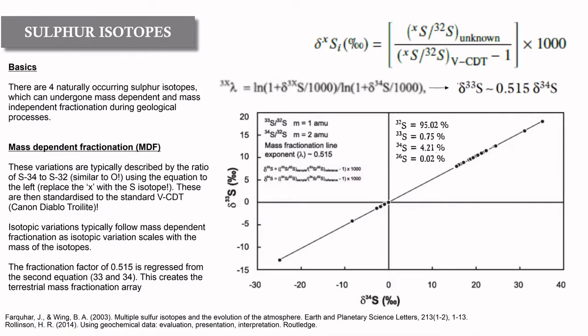Moving on to sulfur isotopes - in some ways they operate very similarly to oxygen isotopes. There are four naturally occurring sulfur isotopes: 32, 33, 34, and 36. There is also a cosmogenic sulfur-35. These can undergo mass-dependent and mass-independent fractionation. For MDF, variations are typically described by the ratio of sulfur-34 to sulfur-32, much like oxygen-18 to oxygen-16. Using the delta equation, we can replace x with 33, 34, or 36, but 34 is most common because sulfur-32 and sulfur-34 are the most abundant and easiest to measure.